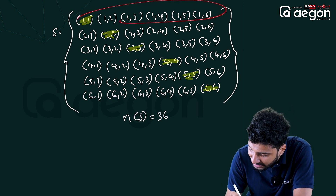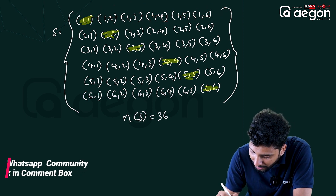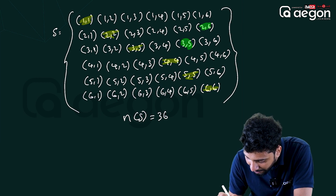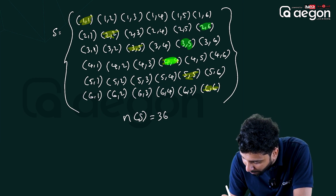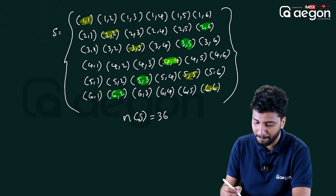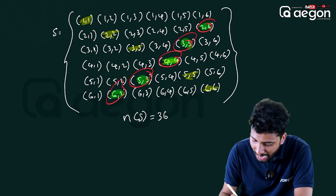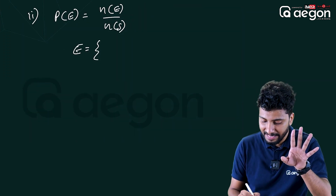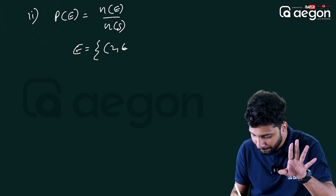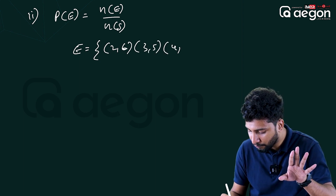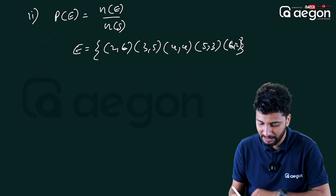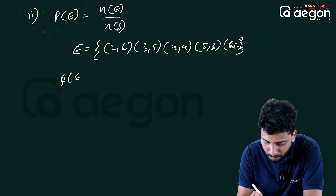The random dice numbers that sum to 8: (2,6), (3,5), (4,4), (5,3), (6,2). Those are the five favorable outcomes. So the probability of E is equal to five by thirty-six.